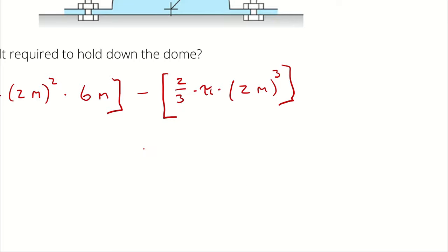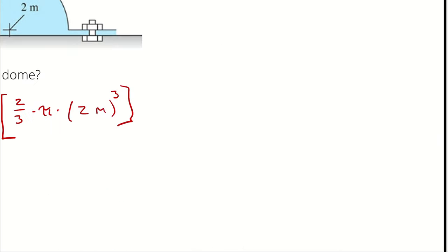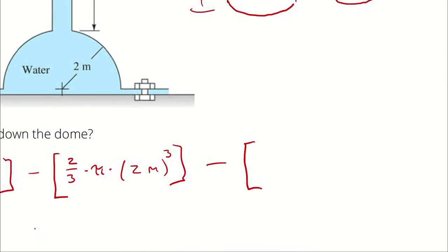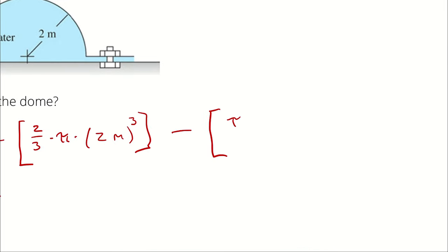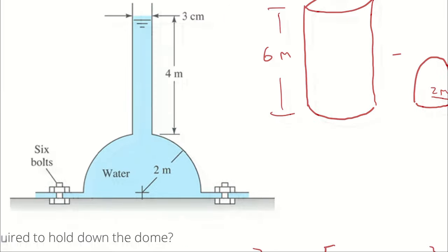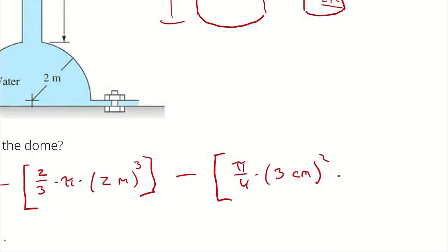And then I'm subtracting out that little straw tube at the top, and that is pi over four times three centimeters squared, because I have a diameter not a radius, times the height of that cylinder, which is four meters.